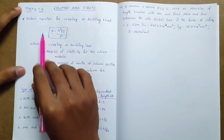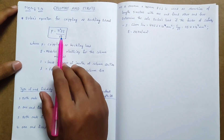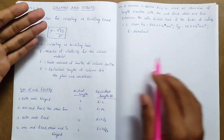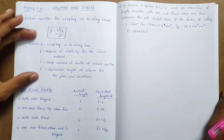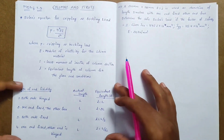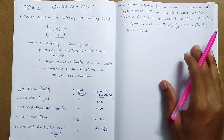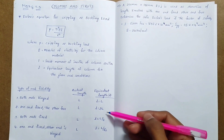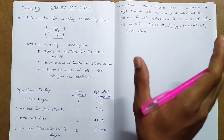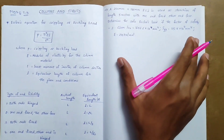For Euler's equation, P is equal to π² × E × I divided by L². Here, π is pi, E is modulus of elasticity, I is moment of inertia, and L is effective length. We also know the end conditions — we have a table from the IS456 codebook for effective length conditions.